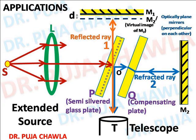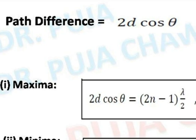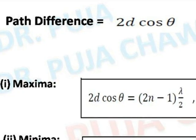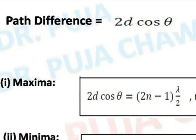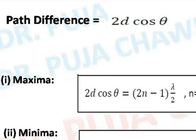Before I discuss the applications of Michelson interferometer, one concept is very important. Suppose the distance between m1 and m2 prime is small d, and I have moved the mirror m1 through a distance small x. What would be the change in the path difference? If you observe the path difference equation, path difference equals 2d cos theta. In this equation if d is changed to d plus x, the change in path difference would be 2x.